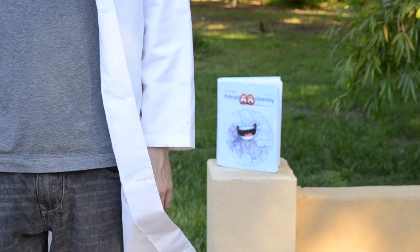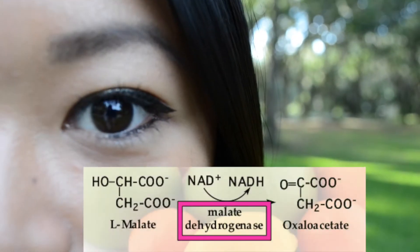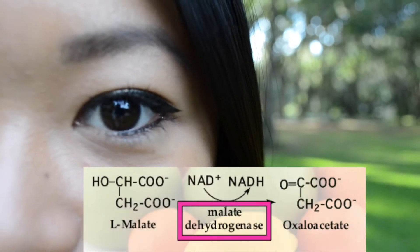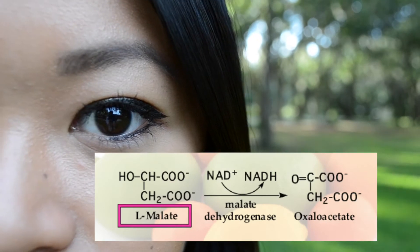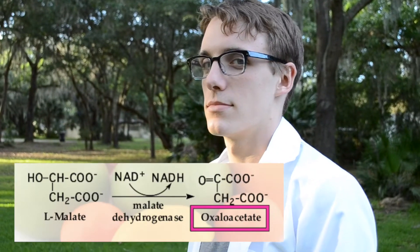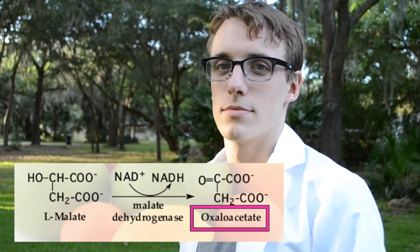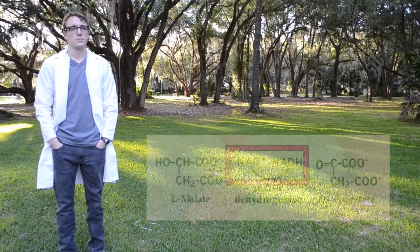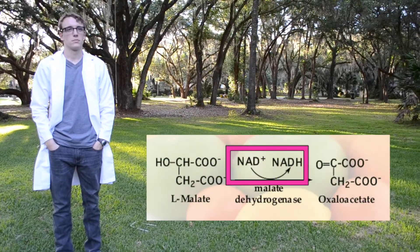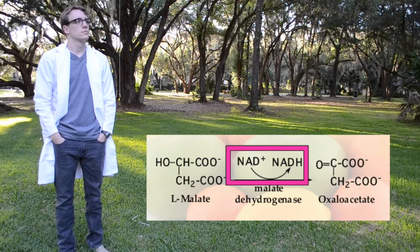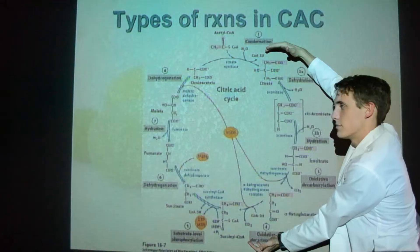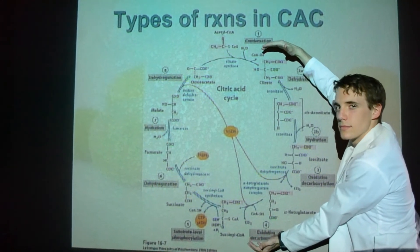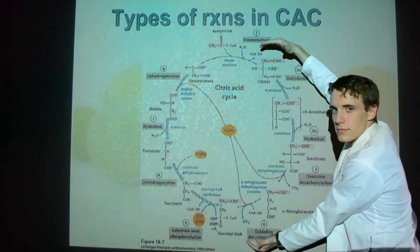In step 8, malate dehydrogenase turns malate into oxaloacetate, and turns NAD into NADH. It just goes in a cycle — the citric acid cycle.